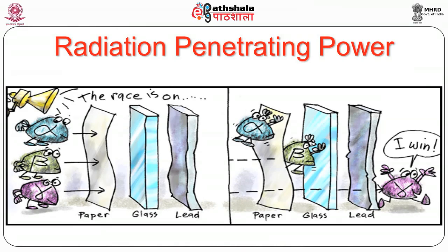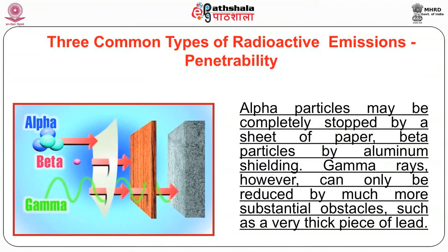This is a picture about radiation penetrating power — a race between alpha, beta and gamma. Alpha can be stopped by paper, beta can be stopped by glass or aluminium. Finally, gamma wins the race — having crossed paper, glass and finally lead. If the lead is not of equivalent or proper thickness, gamma comes out. Alpha particles may be completely stopped by a sheet of paper, beta particles by aluminium shielding, but gamma rays can only be reduced by much more substantial objects such as a very thick piece of lead or concrete.